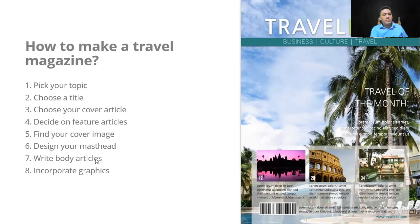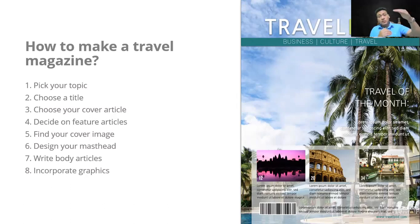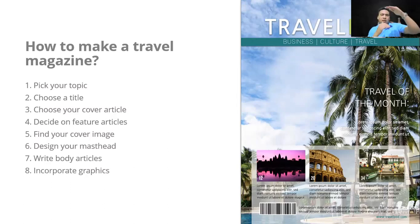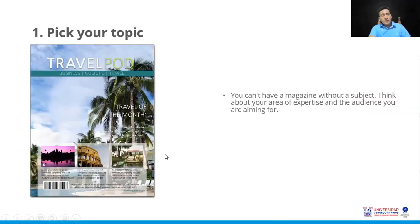Then point 7: write body articles. You already decided which articles to write about — now you write them. Point 8: incorporate graphics, meaning the images we're going to include, because every article needs a descriptive image, a brief review of the place — which can include a little history if it warrants it — and the activities that can be done there. Basically: image of the place, brief review, and activities.